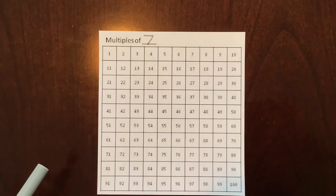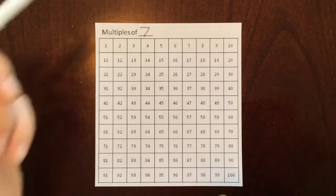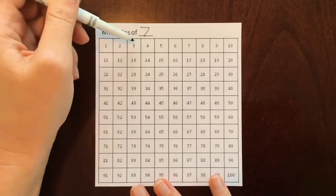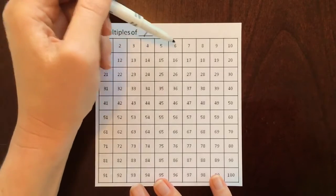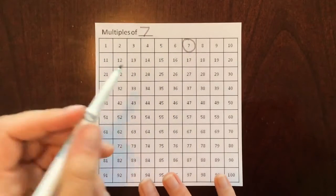Today we are doing the multiples of seven and we're going to start at one, two, three, four, five, six, seven. Let's circle that as the first multiple of seven.